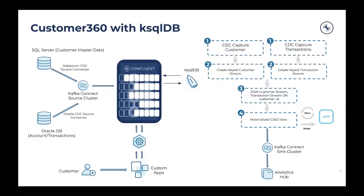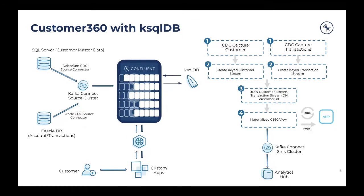With the Confluent platform, we make use of what are called connectors — pre-built sets of components available to download and install. We can move data from these source databases into Confluent platform. The Confluent cluster is where we move data from all these different databases and aggregate it to build what is called the single view of the customer. You can always search for the system you're trying to integrate on Confluent Hub to see if a connector is already available.